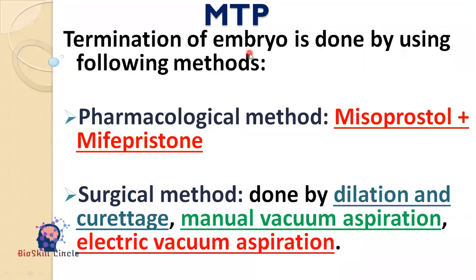Now we will talk about methods used to perform MTP. The first is the pharmacological method, in which medicines are used. A combination of misoprostol, which is a prostaglandin, along with mifepristone, which is an anti-progesterone, is used. As we know, progesterone is a pregnancy hormone that thickens the endometrial lining and maintains the pregnancy.